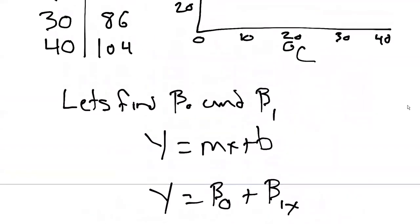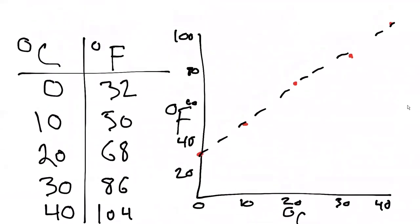Oftentimes, you'll see some programs will actually write that on the line. We could say this line is degrees Fahrenheit equals 32 plus 1.8 times degrees Celsius. That would describe the shape of that line. We'll talk more about the y-intercept and the slope of that line as we talk more about regression.